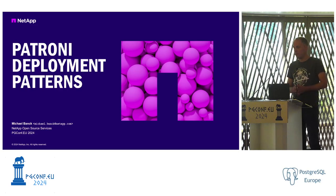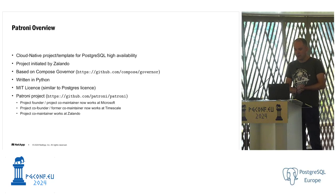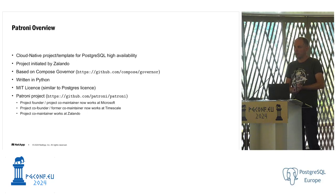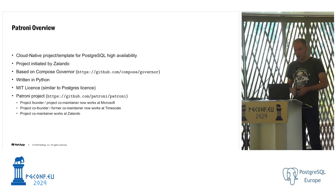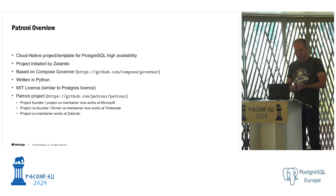There's rep manager, PG auto failover, and pacemaker for old-school fans, but Patroni is the most widely used. As a quick overview: it's a cloud-native project initiated by Zalando, based on Compose Governor, which was originally written by Compose and quickly forked by Zalando. It's in Python with an MIT license — similar to Postgres but not exactly the same. One of the project founders is now at Microsoft, another at Tamscale.